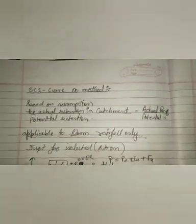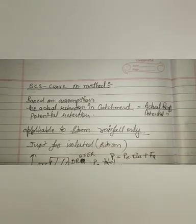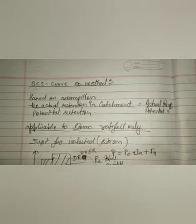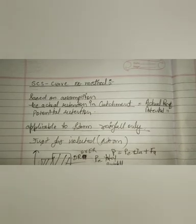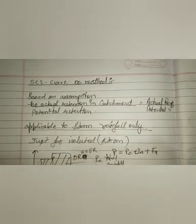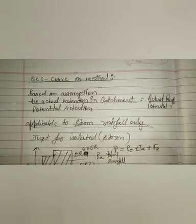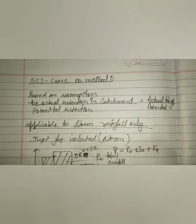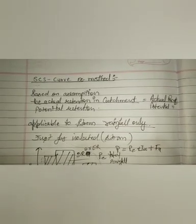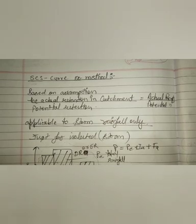Good afternoon students. Today I am going to discuss the SCS-CN curve number method of estimating runoff volume. First, let me give you a brief introduction. The SCS-CN method is developed by the Soil Conservation Services of the United States of America in 1969. It is a very simple, predictable, and conceptual method of estimating direct runoff depth. It relies on only one parameter, which is called CN, that is the curve number.